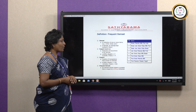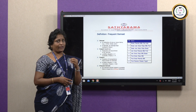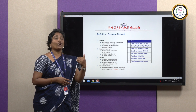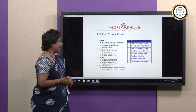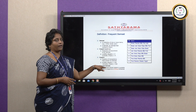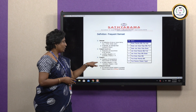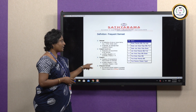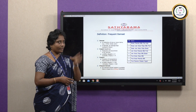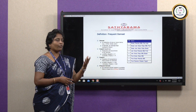What is support? It is a fraction: the number of times the product occurred divided by the total number of transactions. For example, milk and bread occur together in three transactions out of eight, so support is 3/8. Similarly, soda and chips occur four times out of eight, so support is 4/8.